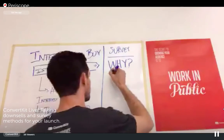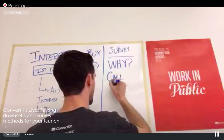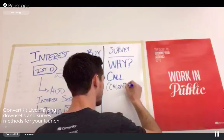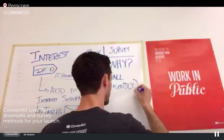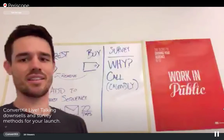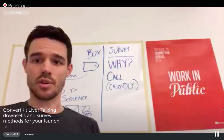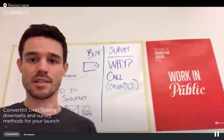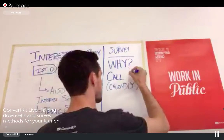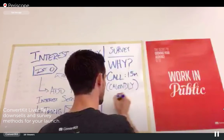The other thing is you want to offer them a call. I like to use a service called Calendly — just Google it. What that allows you to do is put a link in your emails that says, 'Hey, book a call with me.' I would keep it at 15 minutes and have that conversation with them.